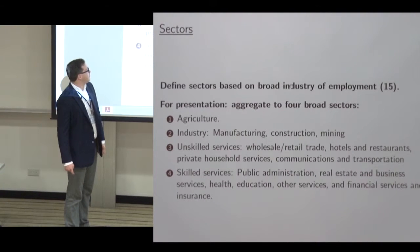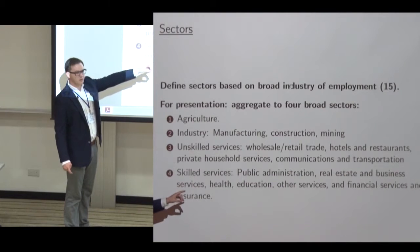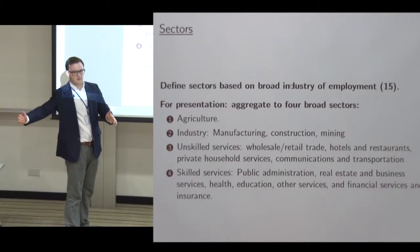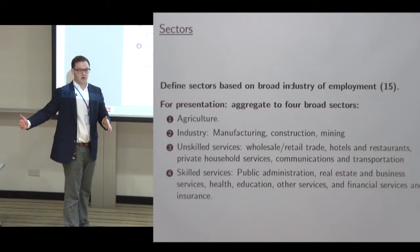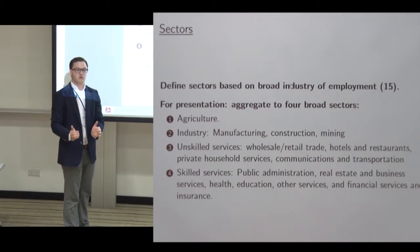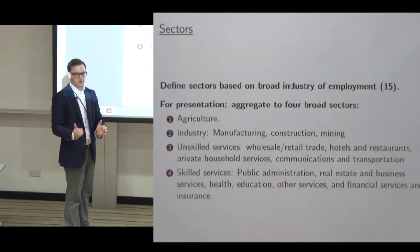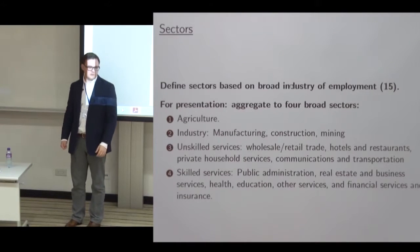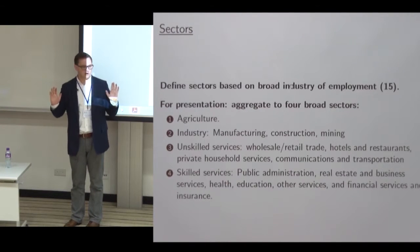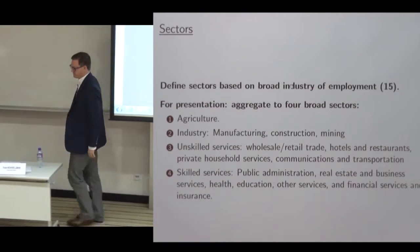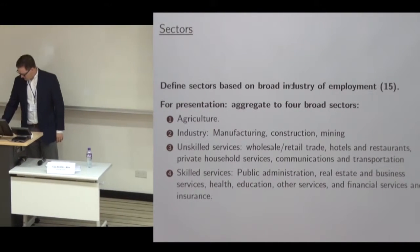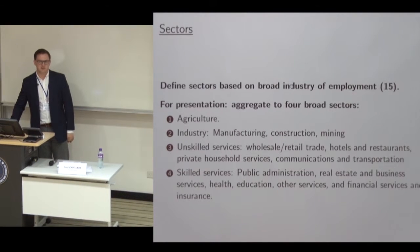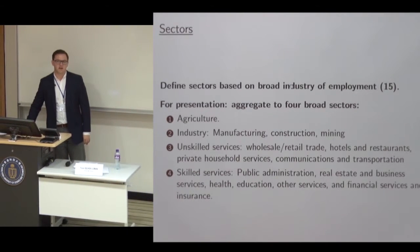Ideally I would further disaggregate communications and transport to isolate the IT sector, but I can't do that across countries — when I go to the cross-country data, communications and transportation is just one category. So I'm tying my hands to be consistent. In the US alone I have 455 industries, but the difference between industry codes in the US and other countries is striking. Other countries have something like 100 agricultural industry codes; the US has two.